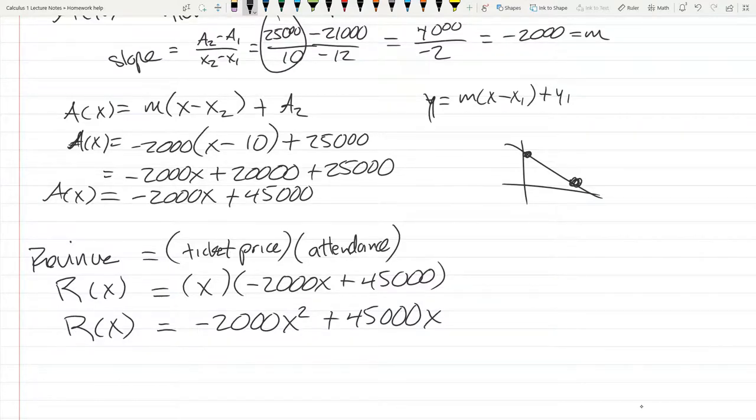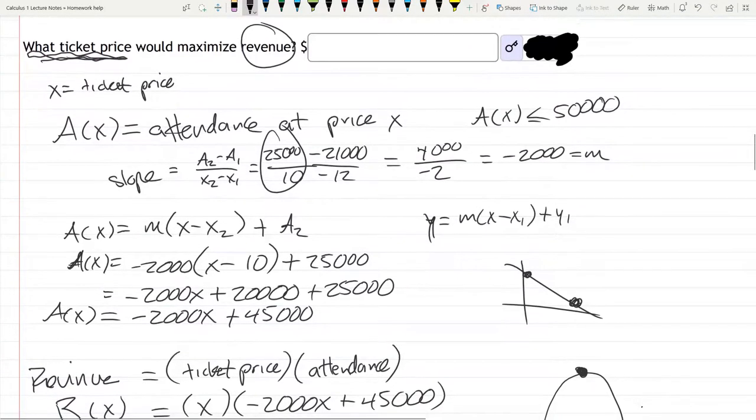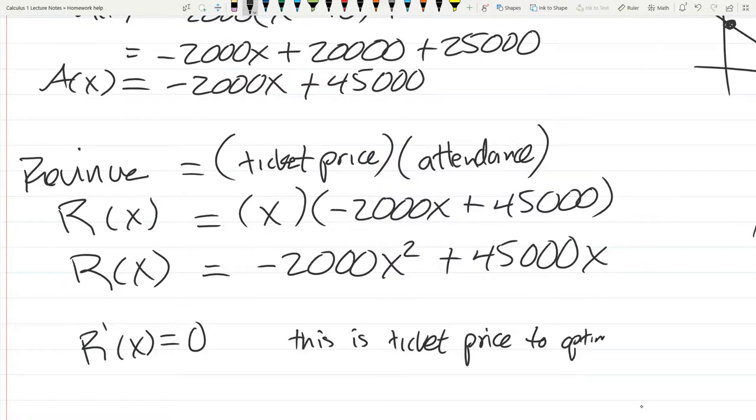Take the derivative, set it equal to zero, and that'll give you the ticket price that'll maximize revenue. This is a sad parabola, so when you graph it, the critical value you're finding is going to be a maximum. They're asking for the ticket price, not the revenue, so they want to know X. This is the ticket price to optimize revenue.